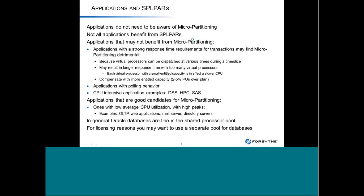This leads into a discussion about applications on shared processor LPARs. Should you put everything in a shared processor LPAR? The answer is always: it depends. When you use shared processor LPARs, instead of getting a full core every time something gets dispatched, it gets a percentage of the core. For instance, if my entitlement is 0.5 of a core and I have two virtual processors, when I get dispatched, each virtual processor will get a quarter of a core, or 2.5 milliseconds.